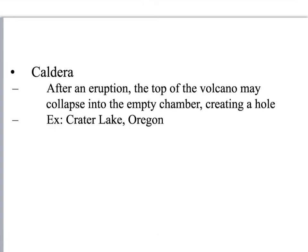A caldera can form after an eruption. This is where the whole top of the volcano may collapse because the magma chamber is now empty and there's nothing to support the overlying volcano. Think of it like a sinkhole — a cave gets too big and the top crashes in. The volcano erupts, leaves a big empty hole, and the volcano above weighs too much so it comes crashing down. This is different from a crater at the top of a volcano. One example of a caldera is Crater Lake in Oregon.